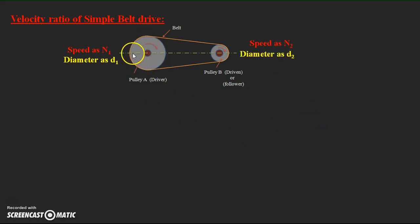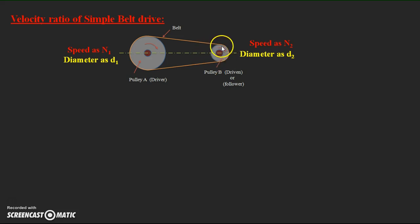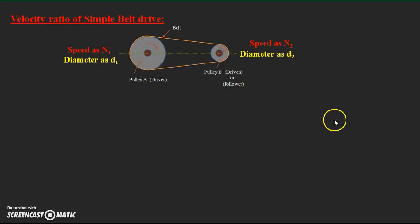During power transmission from driver to driven, the linear distance covered by the belt over the driver in one minute will be equal to the linear distance covered by the belt over the follower in one minute. Both distances covered per minute by the belt on both pulleys will be equal.